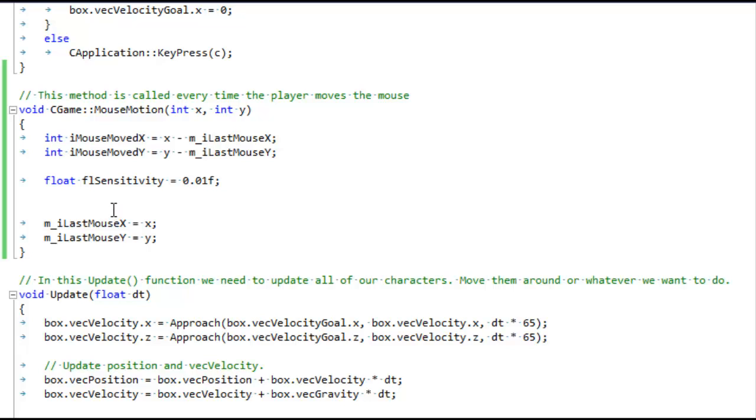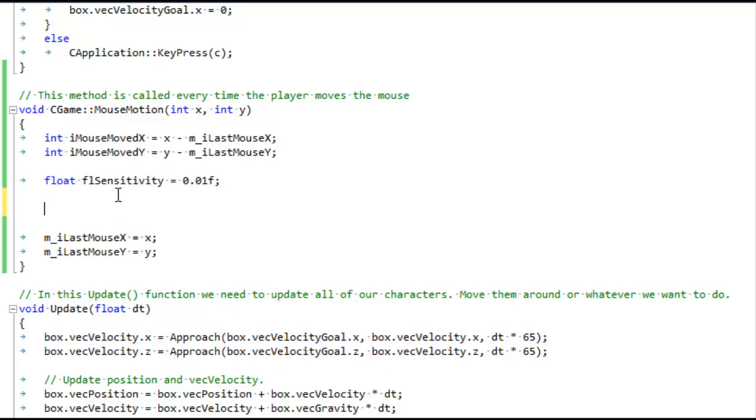All right, let's go over to the game function where I've added this new mouse motion method. This gets called every time the player moves the mouse. And you can see I've set up this sensitivity value. This is like the sensitivity setting you see in a lot of games, mouse sensitivity. And you can see I've got it set really far down low because we need that to be really far lower, it would just be too sensitive.